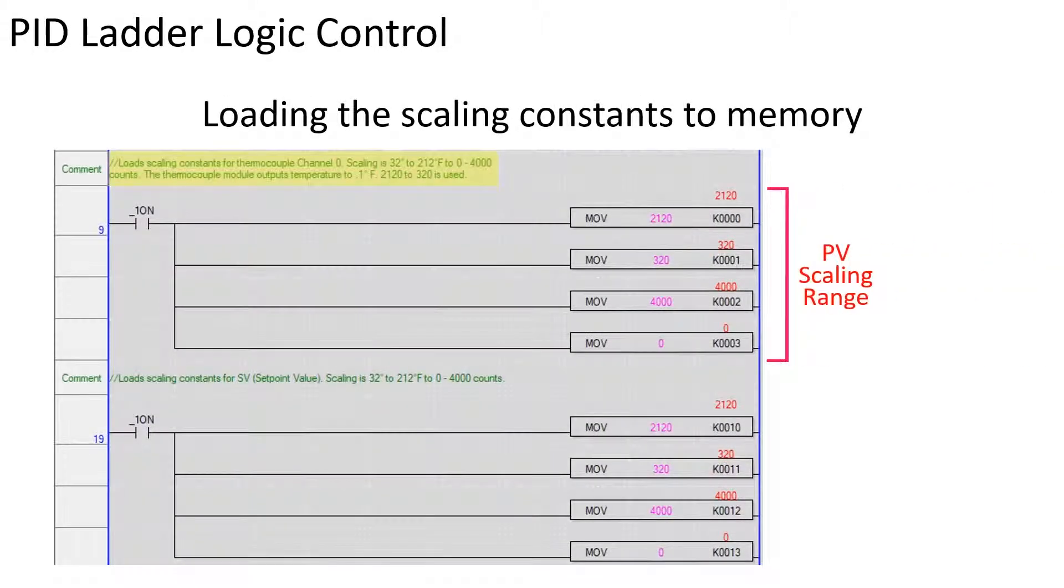The PV scaling is 32 to 212 degrees Fahrenheit. This range is scaled for 0 to 4,000 counts. Ladder rung number 9 loads the constants for scaling the PV. These constants will be used to scale the PV temperature range to the analog counts.